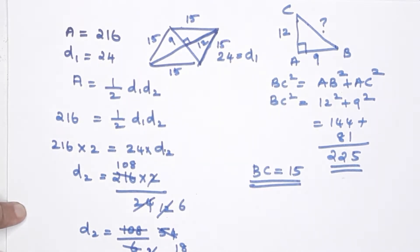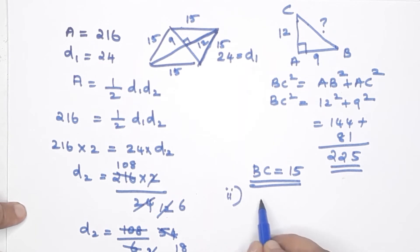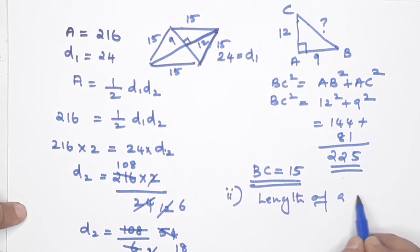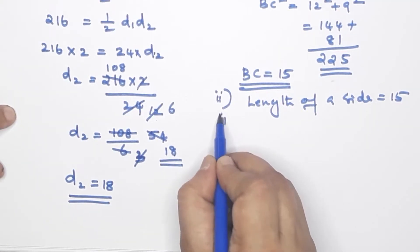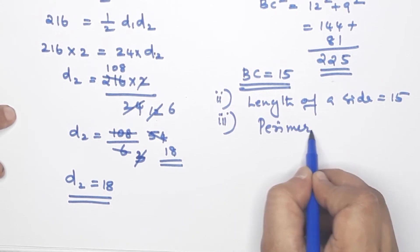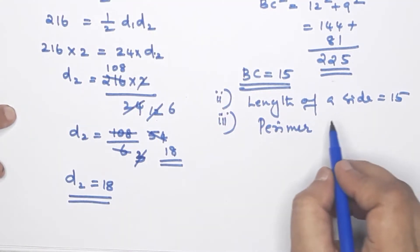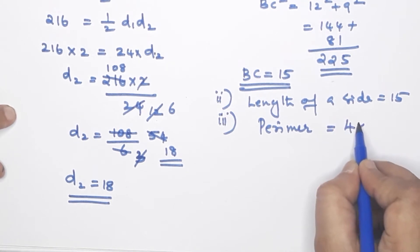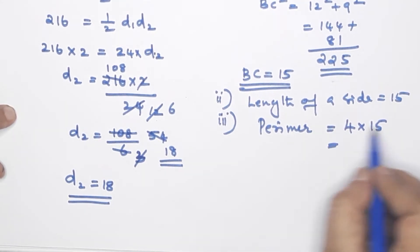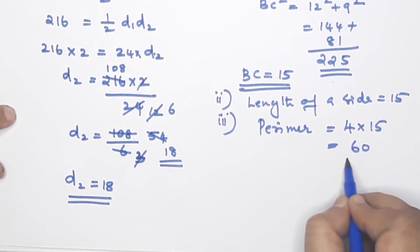Since all four sides of a rhombus are equal, each side is 15. The length of the side is 15 centimeters. For the third question, the perimeter equals 4 sides = 4 × 15 = 60 centimeters.